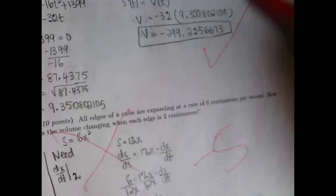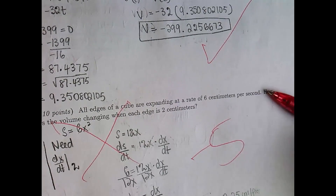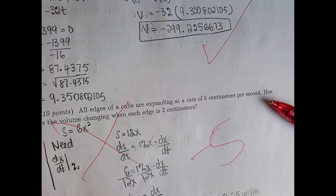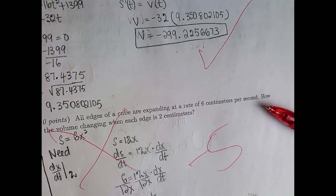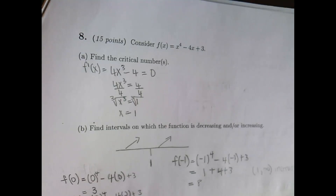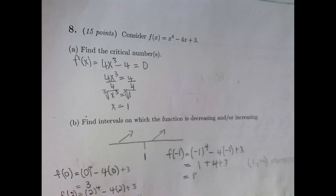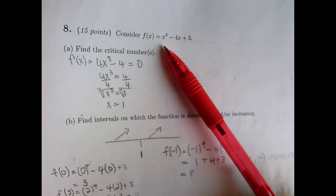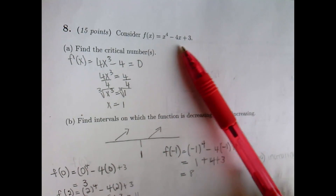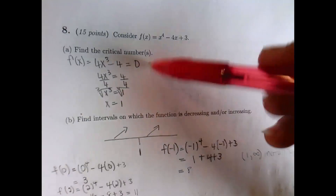The best way to grade tests, I find, is to grade them quickly because if you grade them quickly you tend to be more lenient. Here's another one — find the critical numbers. You have to take the derivative and set it equal to zero. This person did that super correctly, so awesome work.